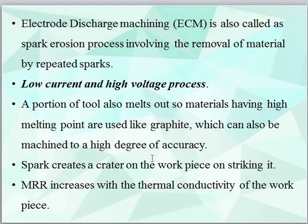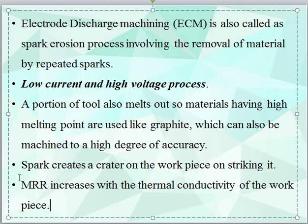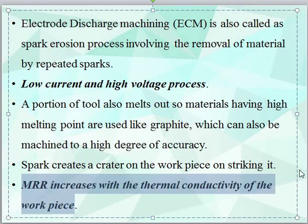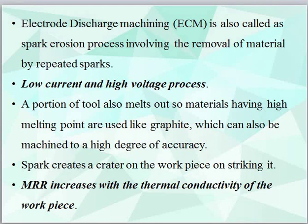In electro discharge machining the tool is made up of graphite because it is a spark erosion process involving erosion of the tool itself. Graphite is used because it has a higher melting point and can also be machined to a higher degree of accuracy. When the spark is incident on the surface of the workpiece, it creates holes or craters. The material removal rate (MRR) increases with the thermal conductivity of the workpiece.